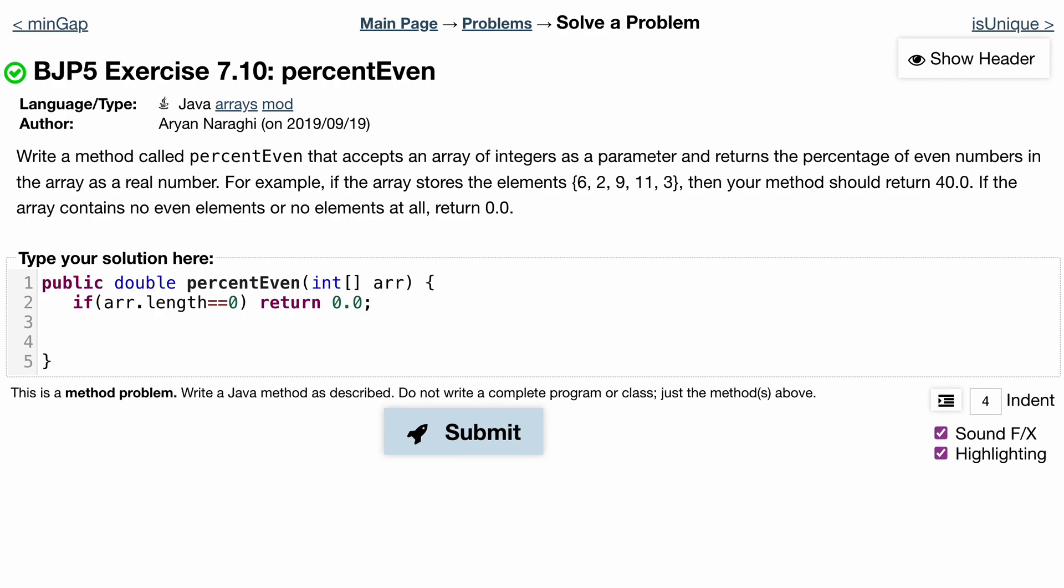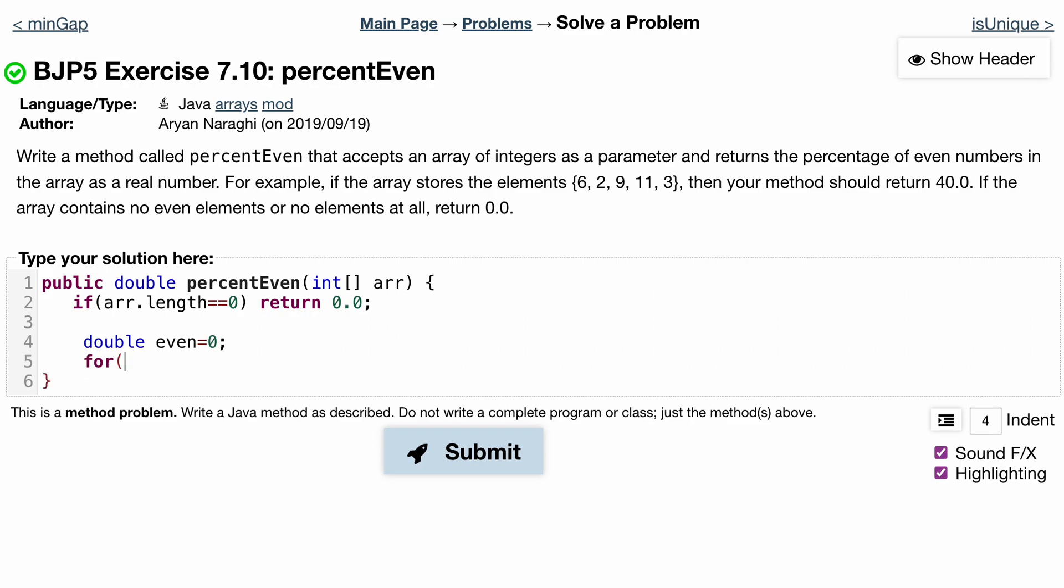Otherwise we're going to be inside of here and we want to increment a counter. This counter is going to store how many evens we have, so we'll just do double even is initially equal to 0.